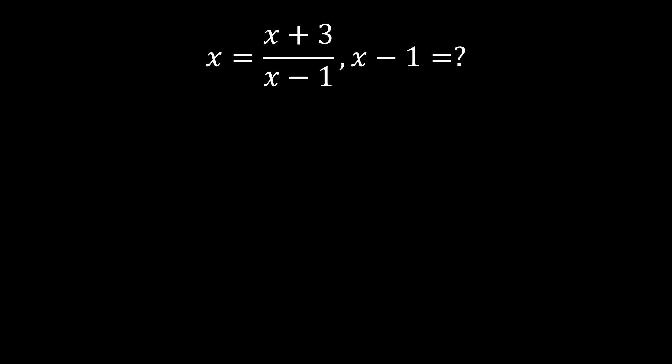But the one thing, and that is the simplest way that we could do, is just by subtracting 1 on both sides. What we get is x minus 1 equals x plus 3 over x minus 1 minus 1.